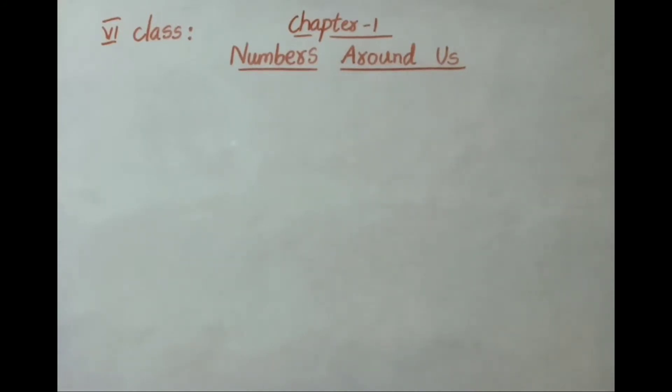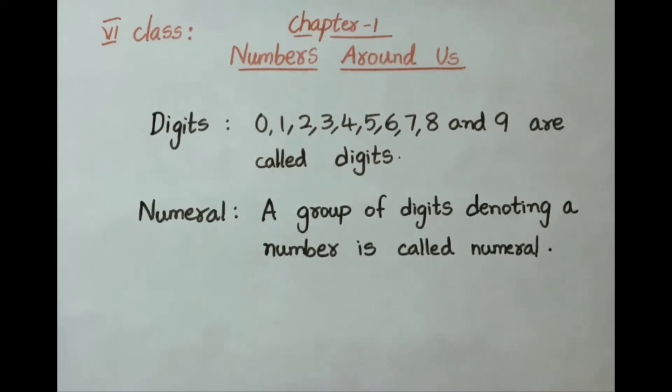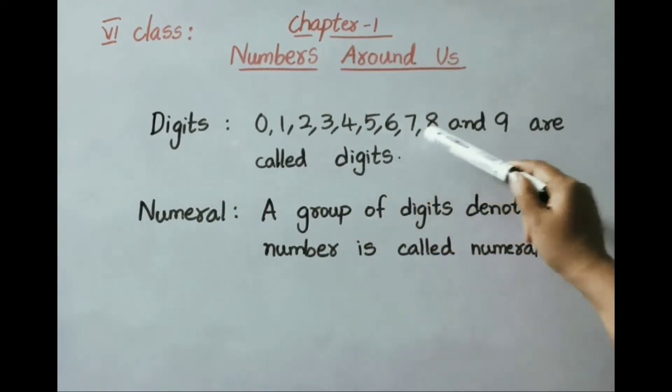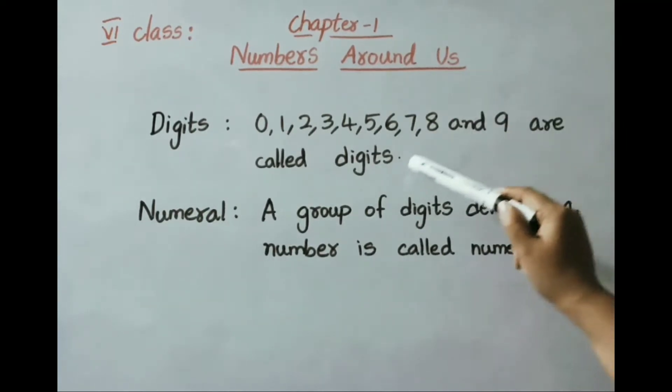Hello everyone, welcome to our channel. Today I'm going to start 6th class chapter 1: Numbers Around Us, as per new syllabus. Number system is the backbone to mathematics. Numbers are used in different contexts and in many ways. Now let us see what are digits. Digits means 0, 1, 2, 3, 4, and so on up to 9 are called digits.